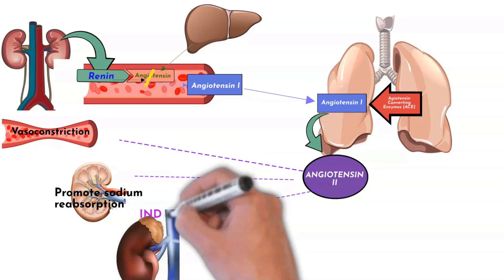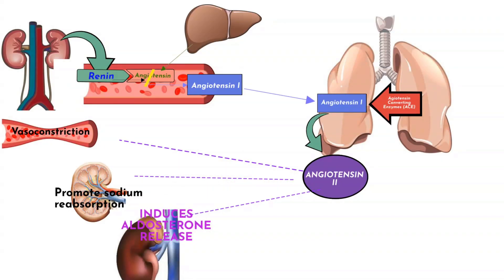Angiotensin-2 also induces the release of aldosterone, another compound we need in this system. Aldosterone is found in the adrenal cortex, and due to the presence of angiotensin-2, the adrenal cortex releases aldosterone. Aldosterone is a mineralocorticoid — a steroid hormone that causes additional sodium reabsorption and water retention in the kidneys. Sodium and water retention causes increased blood volume and subsequently increases blood pressure.